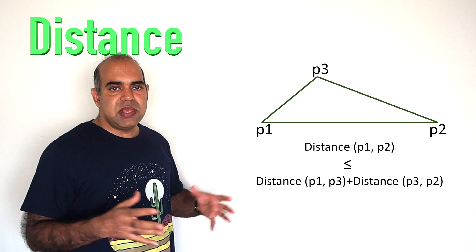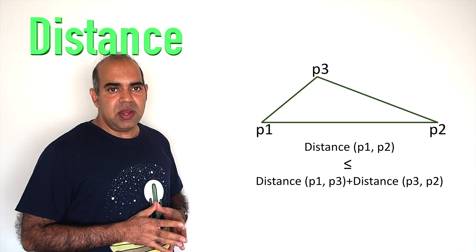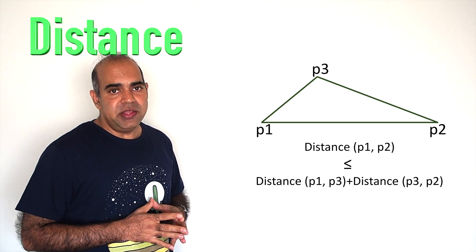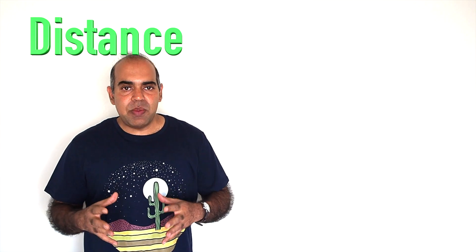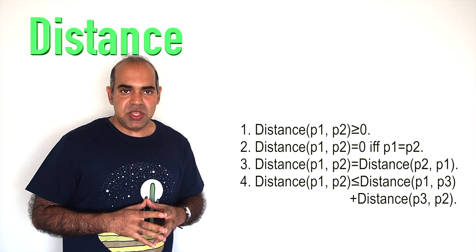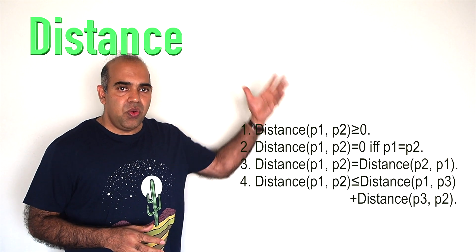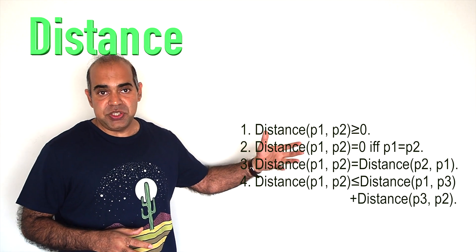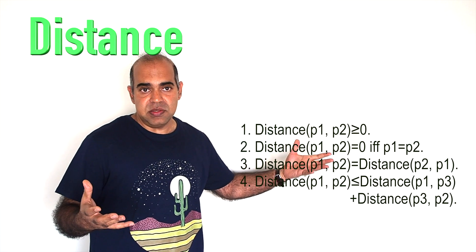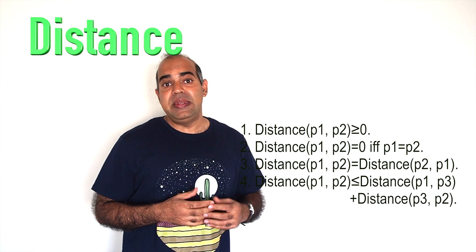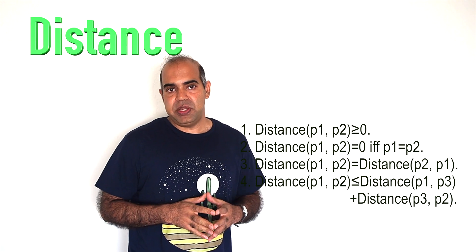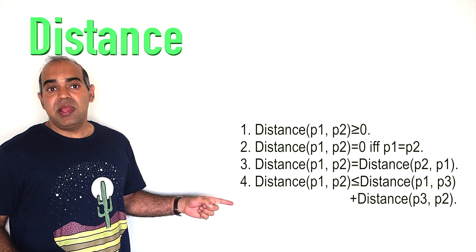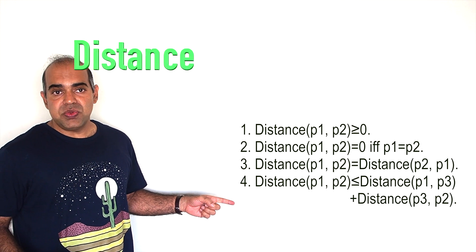This property is called the triangle inequality property. The length of one side of a triangle cannot be greater than the sum of the other two sides. If a distance measure does not satisfy one of these properties, then we cannot call it a distance — we should call it a dissimilarity measure. When coming up with a new distance measure, the fourth property is the hardest to satisfy.